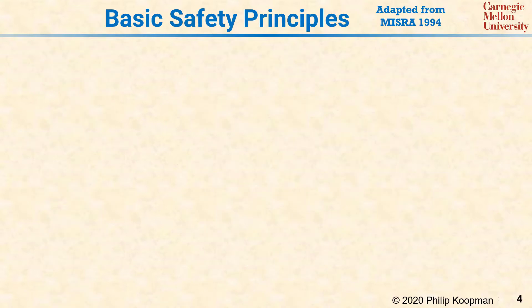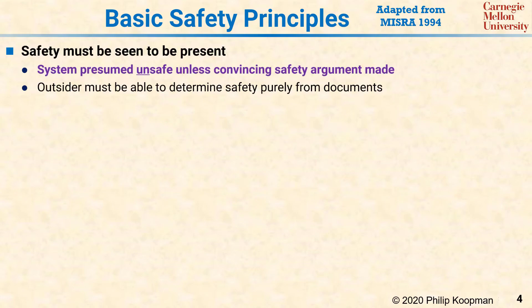Achieving safety requires adhering to a set of accepted principles such as those set forth in the 1994 Automotive Software Safety Standard from the Motor Industry Software Reliability Association known as MISRA. First, safety must be seen to be present. It is not acceptable to just assume a system is safe until you find out otherwise the hard way. Rather, achieving safety requires presuming that the system is unsafe unless convincing evidence has been presented to demonstrate that it really is acceptably safe. As a practical matter, this means that someone from outside the development team must be able to look at a set of written documents and use that as evidence to determine that the system actually is acceptably safe. That set of documents can include things such as test results, but in the end, if it is not written down, it did not happen.